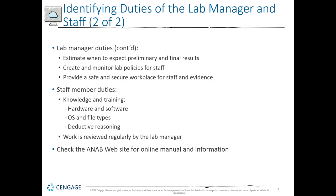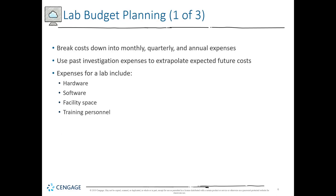There are online manuals and information for developing the accreditation for a lab, but the manager is only part of the equation. A budget is also equally important. The manager may oversee things like funding, but the budget — broken down into weekly, monthly, quarterly, or annual expenses — is critical because investigators can't work if they don't have proper funding. Past investigative expenses help us expect what a future case would cost, which is how budget planning normally takes that into account.